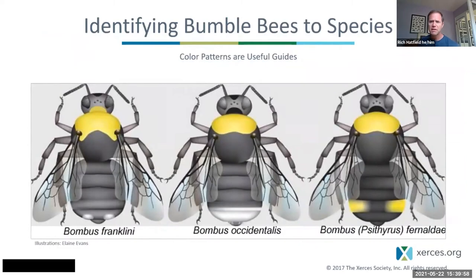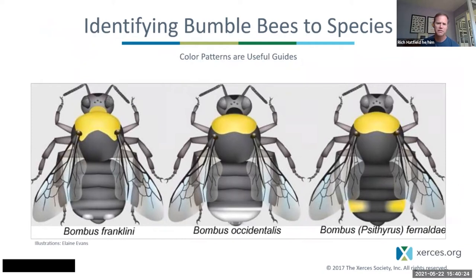That's basically the flowchart. Once you know you have, say, a female cuckoo or a female true bumblebee, then we can start looking at color patterns. It's really important to go through that flowchart first because knowing whether it's a cuckoo or not separates a lot of different species out before you start looking at different color patterns.